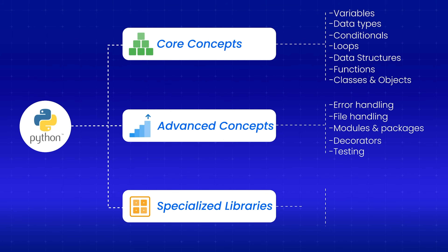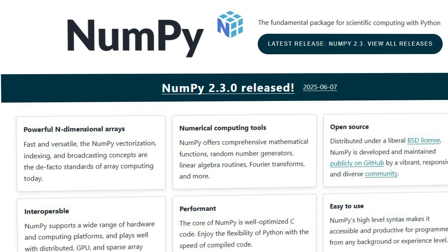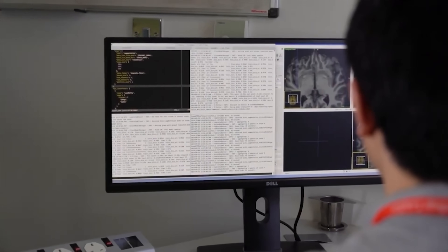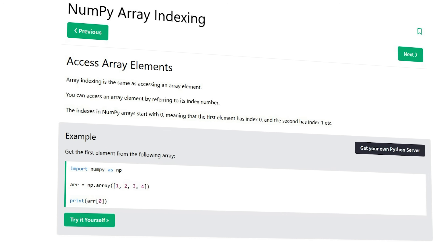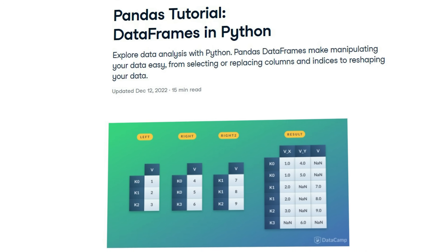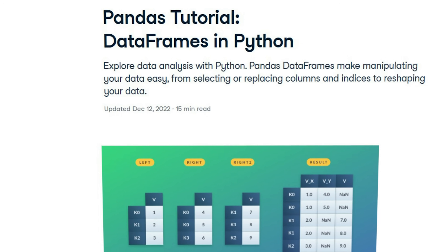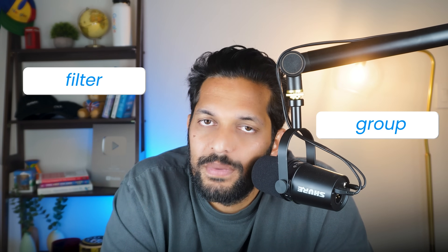If you're going into data science or machine learning, you need to know three main libraries. NumPy is for numerical computing — this is non-negotiable. Every data scientist uses NumPy because it makes working with arrays and matrices really fast. Spend a week getting comfortable with NumPy arrays, indexing, and basic operations. Next is pandas for data manipulation. Pandas DataFrames are like Excel on steroids — you can read CSV files, clean messy data, and analyze it with just a few lines of code. Learn how to filter, group, and merge DataFrames.